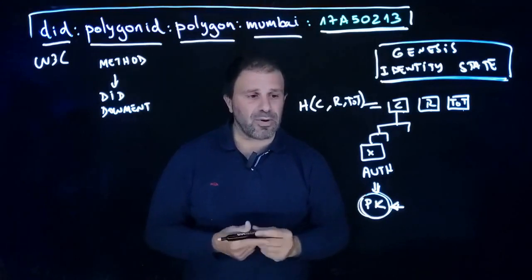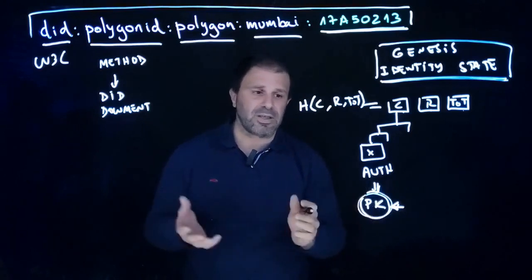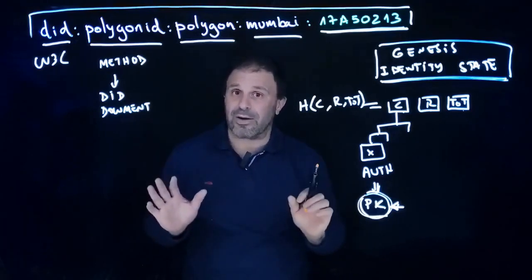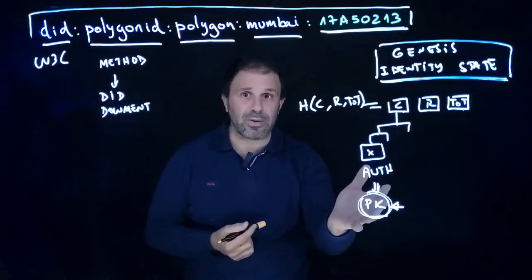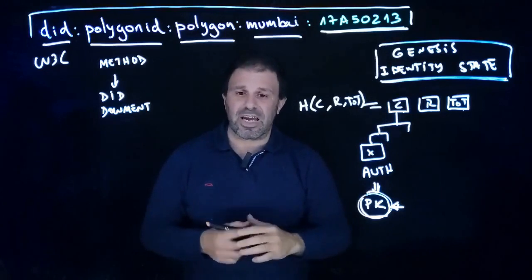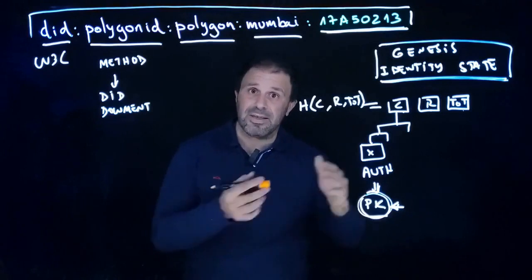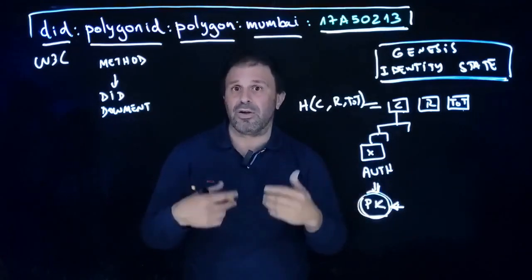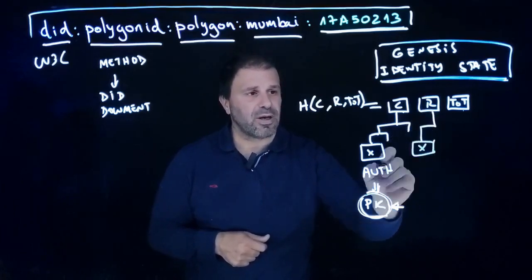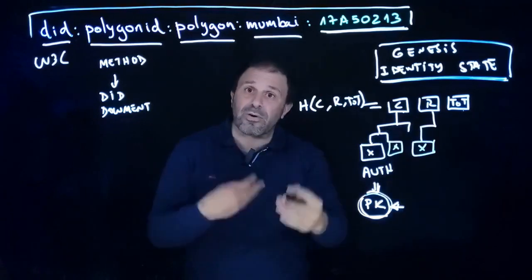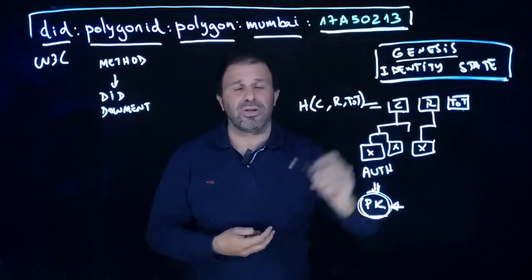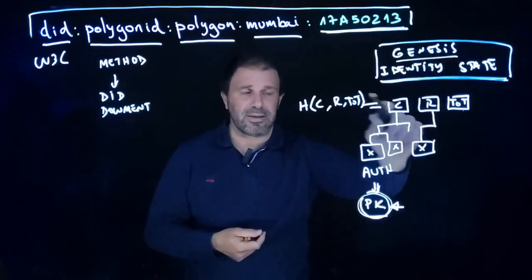If nothing changes and you keep using your identity with the same pair of keys, your genesis identity state is not going to change and it's not going to be published on chain. It doesn't need to be published on chain because everybody can check the ownership of these keys without any other information. But what happens when you need to rotate your keys — when you need to change the keys linked to your identity? Imagine those private keys are stolen. It's like your car is stolen and you let the police know you're no longer in control. You want to let everybody know that these are no longer your keys, and that this other set of keys is now authorized to sign in your name. To do that, you will create a revocation — you will revoke your previous keys and issue another claim for the new keys. You will rotate your keys, and that needs to go to a public registry. Your identity state needs to be published on chain.